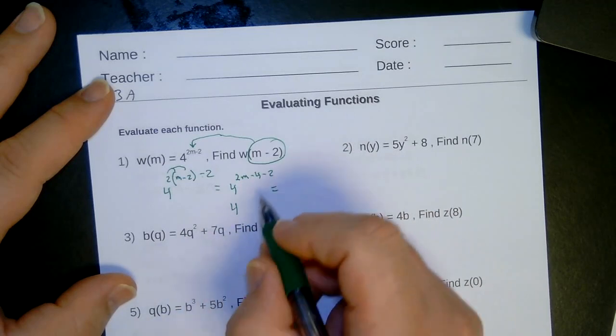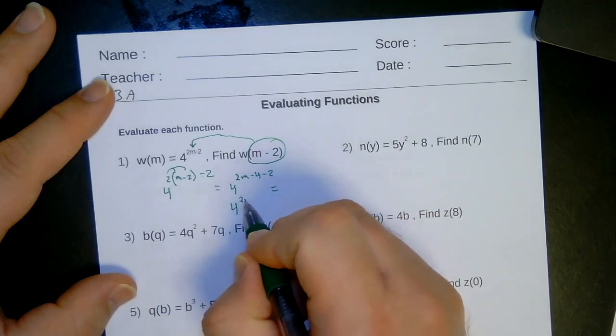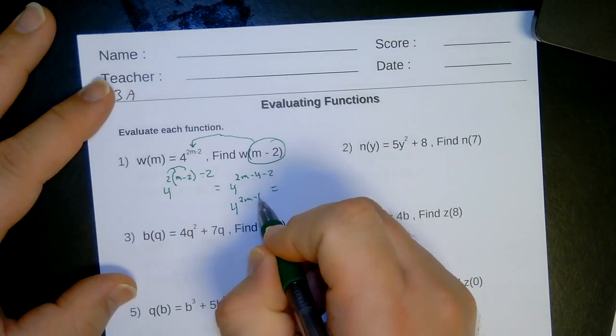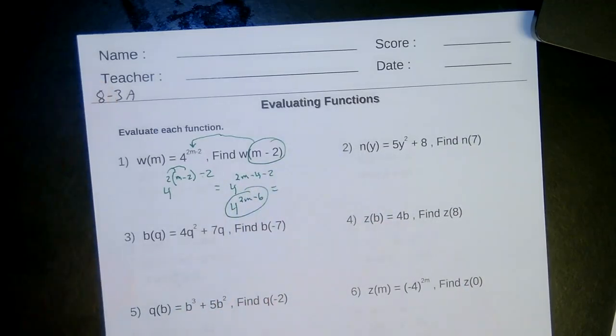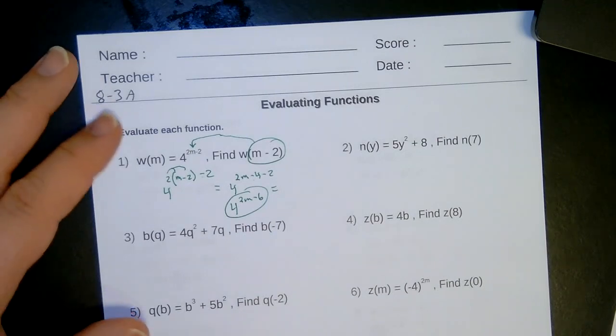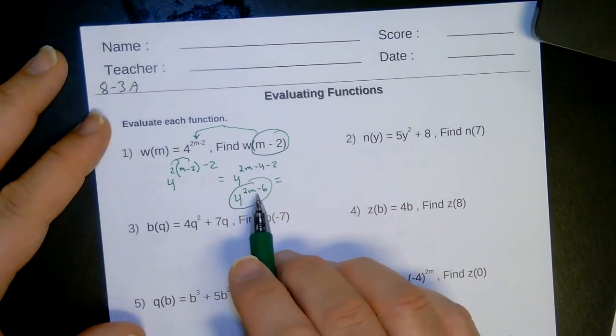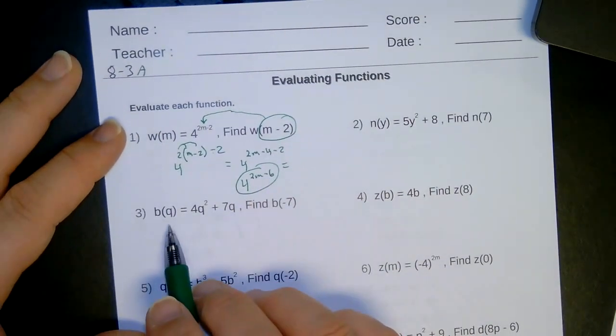4 is my power. And then I have 2m minus 4 minus 2 is minus 6. So there is my final answer. Hopefully that wasn't too bad for you. Interesting, they gave you a real hard one to start out with. Number 3.